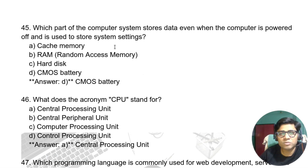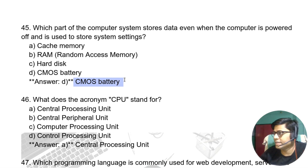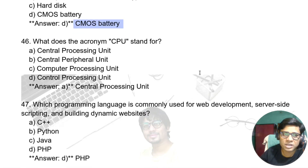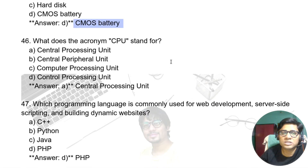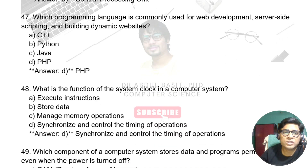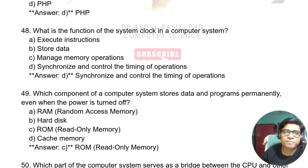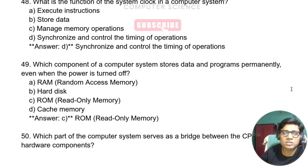Which part of the computer system stores data even when the computer is powered off and is used to store system settings? The answer is CMOS. The CMOS battery stores power, date and time so that when the computer starts, the time continues. What does the acronym CPU stand for? Central Processing Unit. Which programming language is commonly used for web development, server-side scripting and building dynamic websites? PHP. What is the function of the system clock? It synchronizes and controls the timing of operations.